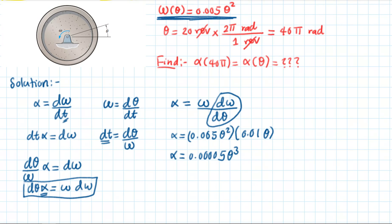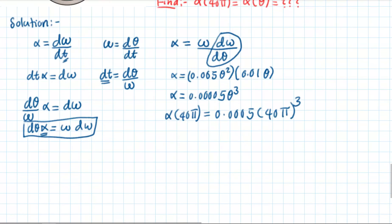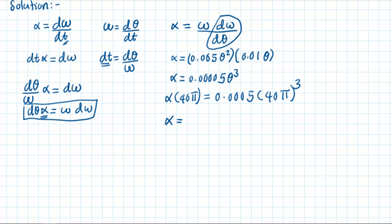Now we can plug in theta equals 40 pi radians. Alpha equals 0.00005 times (40 pi) cubed, which gives us an angular acceleration of 99.22 radians per second squared.